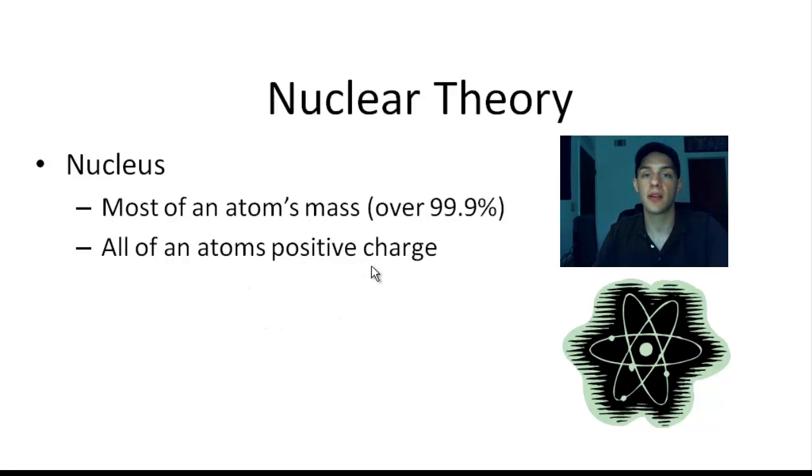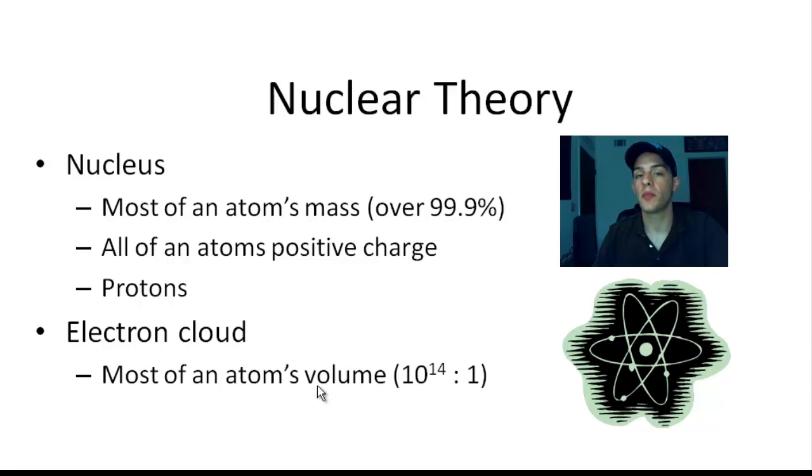Rutherford took it a step further and said that the nucleus is composed itself of subatomic particles, which he called protons. So we have a nucleus that has most of the mass, all of the positive charge, and it's composed of protons. In addition to the nucleus, we have an electron cloud. The electron cloud has most of an atom's volume. When I say most of the volume, I'm talking about a ratio of 10 to the 14 to 1. That means that the electron cloud is 100 trillion times larger by volume than the nucleus. That's huge. And the electron cloud also has all of an atom's negative charge.